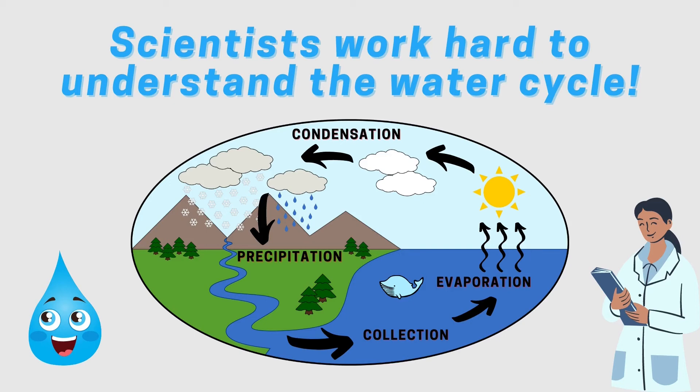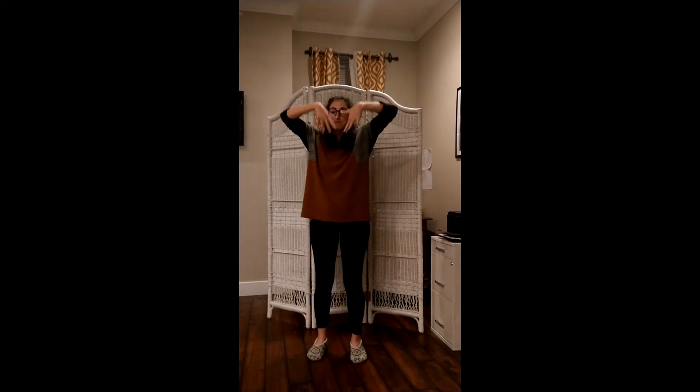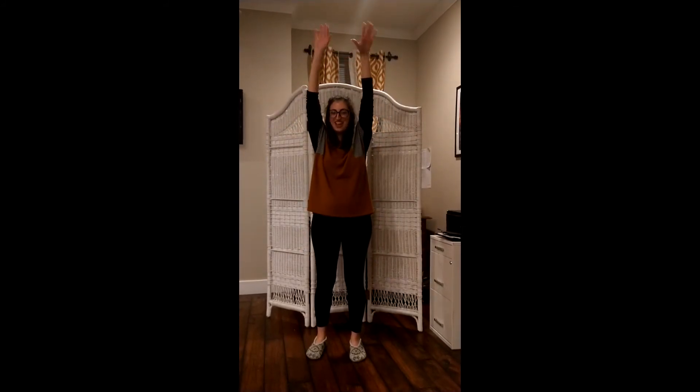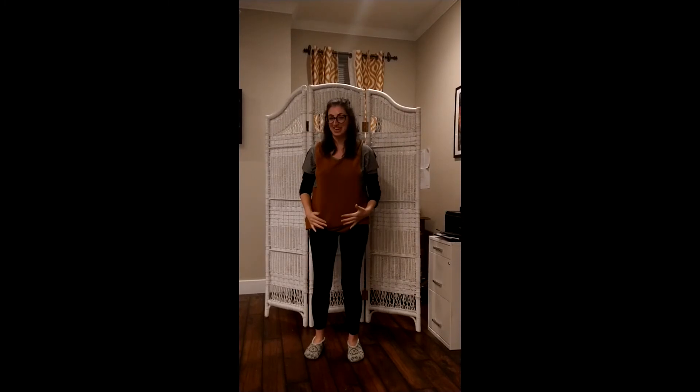To help us summarize what we've learned about the water cycle, my friend Amanda is going to show us a dance. Hi everyone, my name is Amanda and I'm going to teach you the water cycle dance. First, we'll wiggle our hands up for evaporation, then clap your hands together for condensation, then wiggle your hands down for precipitation, and then put your arms in a big circle for collection, like you're a lake or an ocean.